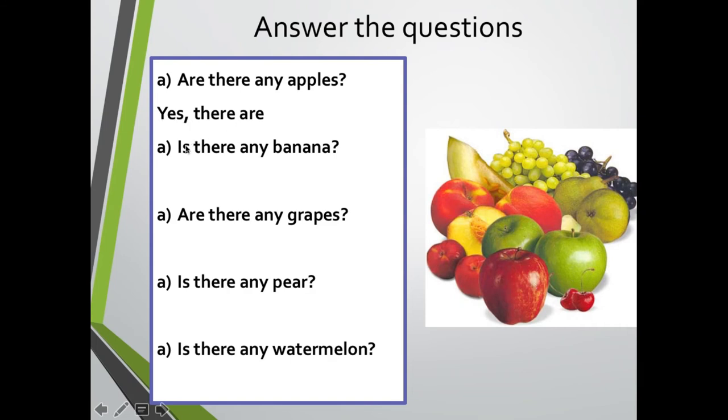There are three apples. Yes there are. Then it says is there any banana. Is there any banana. I can't see banana there so no there isn't. No there isn't. Are there any grapes? Yes I can see some grapes there. So yes there are. Yes there are. Is there any pear? Is there any pear? I can see some pears there. So yes there is. And is there any watermelon? Can't you see a watermelon there? I can't. So no there isn't. No hay sandía. ¿Cierto? No there isn't.